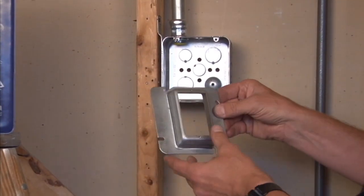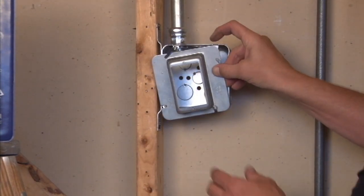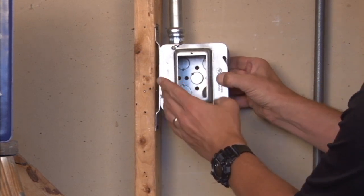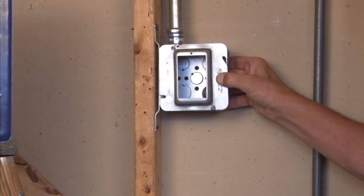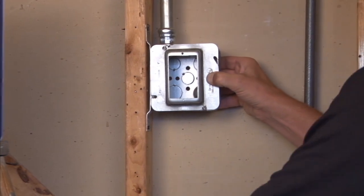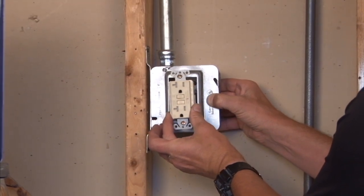You simply mount this product on a 4 and 11 sixteenth inch box by sliding it over the box screws and directly into place. When tightening the box screws, you get a good secure fit between the box and the cover and a perfect opening and threaded holes for any plug, receptacle, or switch.